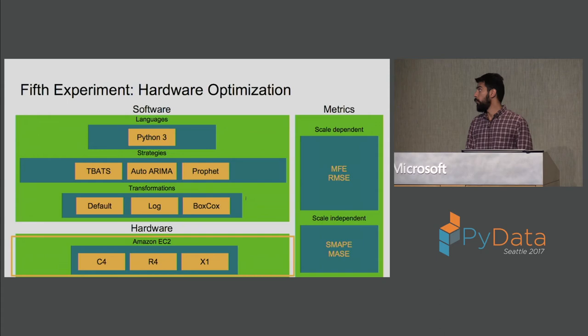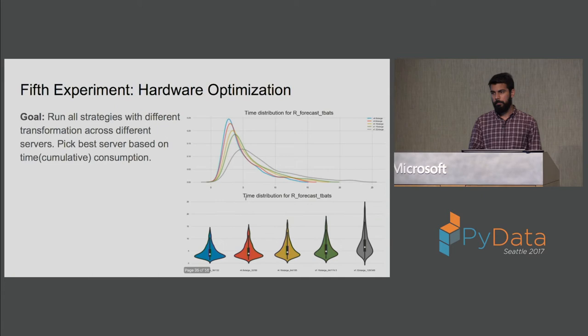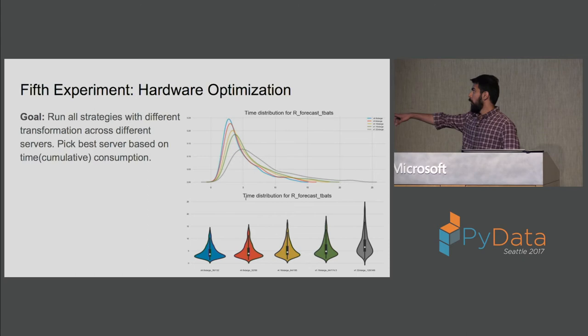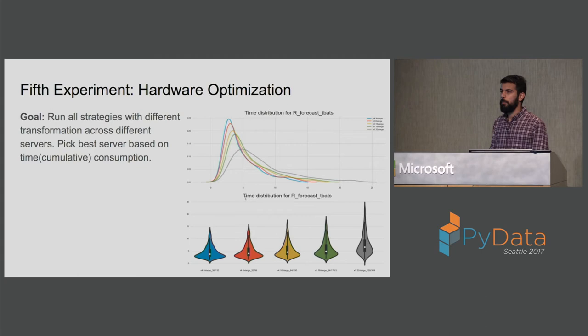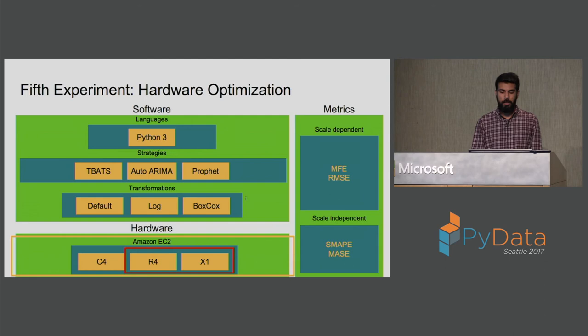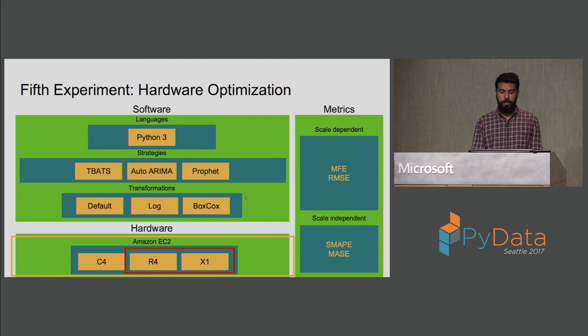To decide what hardware works best, we already had timing data from all combinations, so we compared timing across different hardware types. The C4A type, which is a compute-optimized hardware instance, was a clear winner — that makes sense because we are doing a lot of compute-heavy modeling. We decided to run our pipeline on the compute-optimized system.